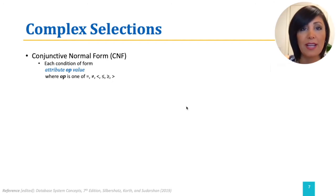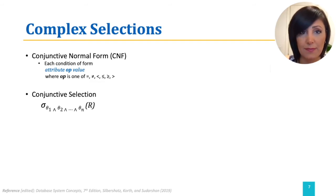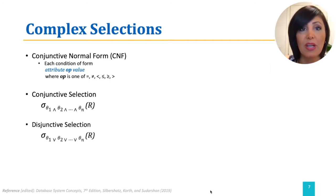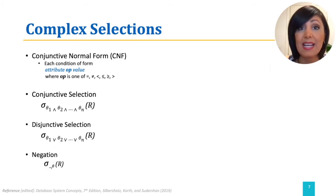If the connector among these conditions is a logical AND of conditions, we call it a conjunctive selection. If the connector among these conditions is a logical OR of conditions, we call it a disjunctive selection. If there is a negation before the condition predicate, we call it a negation selection. So what is the significance? Let's explore.